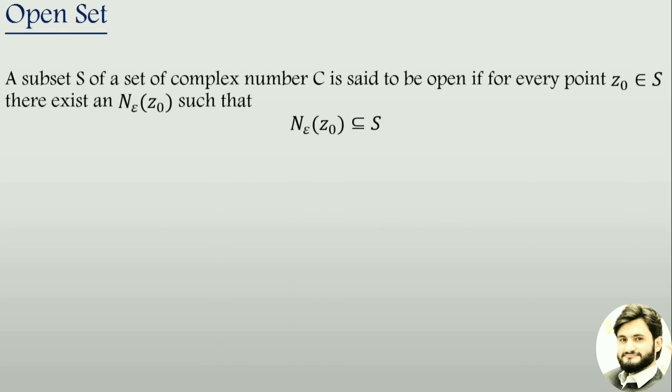In this video I am going to tell you about open set and closed set. An open set: a subset S of a set of complex numbers C is said to be open set if for every point z₀ belonging to S there exists an epsilon neighborhood of z₀ such that Nε(z₀) is a subset of set S.